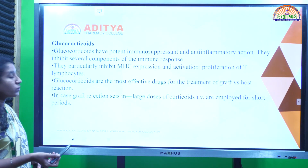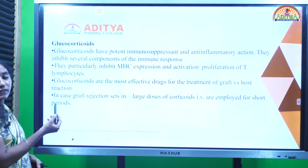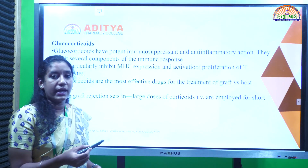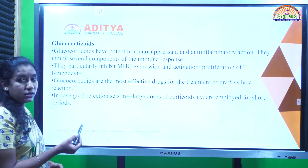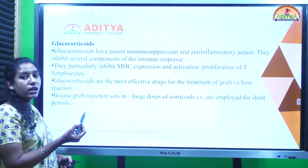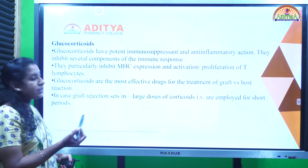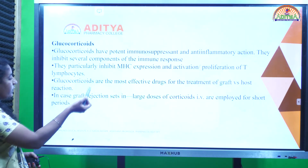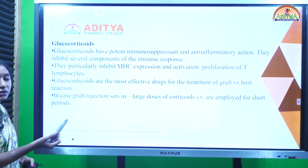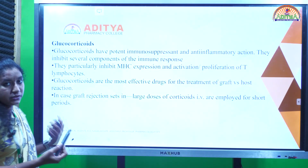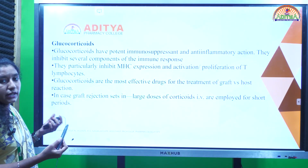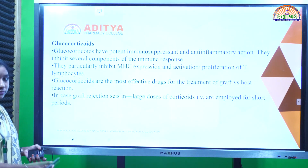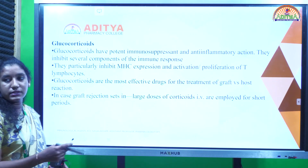The next class is glucocorticoids, which have potent anti-inflammatory and immunosuppressant action. Their mechanism of action is to inhibit major histocompatibility complex (MHC) expression, making them highly effective in treating graft rejection. Large doses of glucocorticoids can be given intravenously for short periods. The remaining drugs will be discussed in the next class.